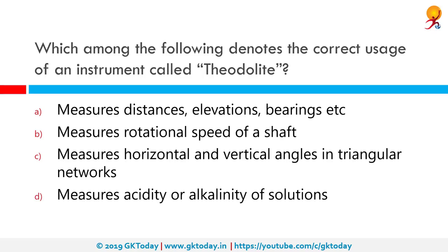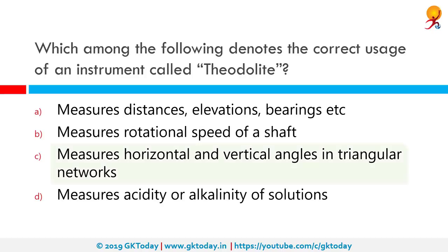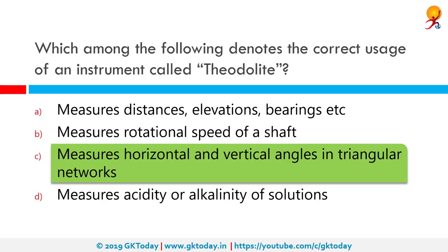Which among the following denotes the correct usage of an instrument called a theodolite? That would be option C: it measures horizontal and vertical angles in triangular networks. A theodolite is a precision optical instrument for measuring angles between designated visible points in the horizontal and vertical planes.